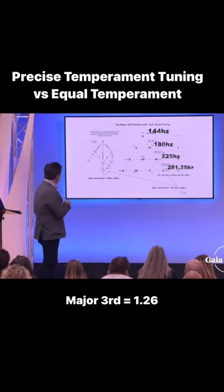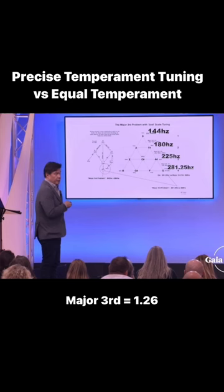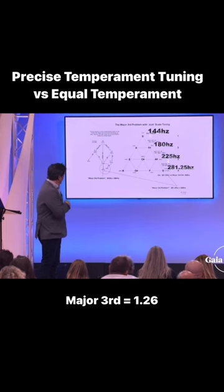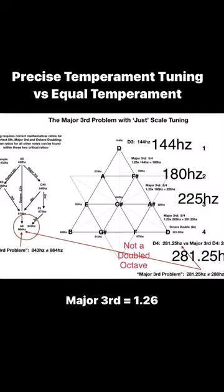Now the problem is that I need to be able to get to this doubling of this octave from here to here also through the perfect fifth. The perfect fifth could do it perfectly, but the major third cannot do it perfectly because if it were doubled, 144 should go to 288. So we've got this gap here of roughly 6.75 hertz. That doesn't fit.